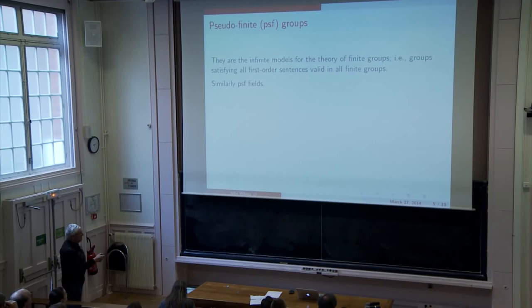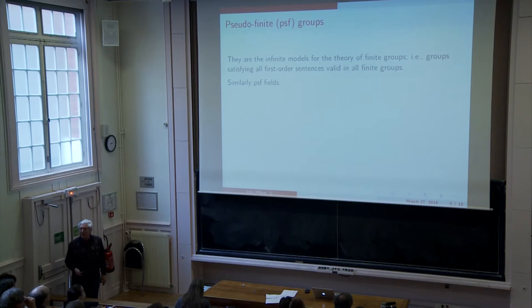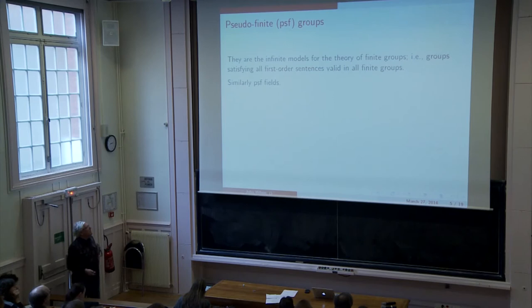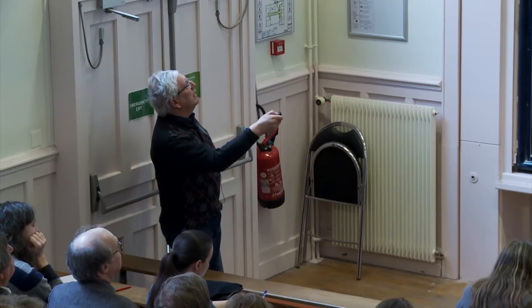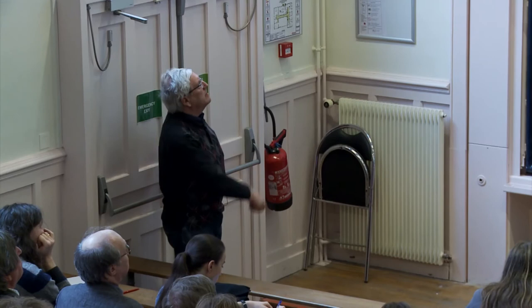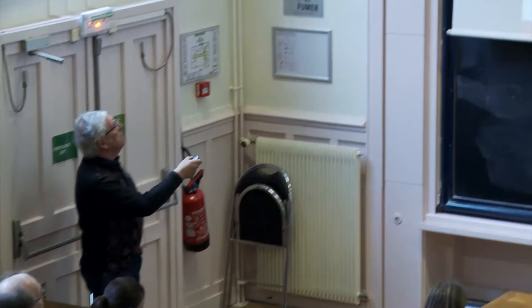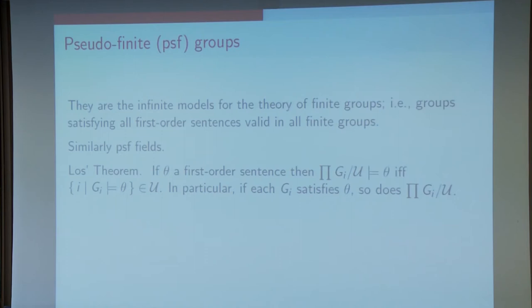I want to talk a little bit about first-order properties of groups and pseudo-finite groups. Pseudo-finite groups are the infinite groups that satisfy all first-order sentences holding in finite groups. Martin Bridson a couple of days ago wrote on the board a sentence that does hold in finite groups and doesn't hold in all infinite groups. That is the sort of thing that is picking out the pseudo-finite groups from the rest of the infinite groups. Pseudo-finite fields are defined in exactly the same way. And what's it got to do with ultraproducts? It's a consequence of Łoś's theorem. If you have a first-order sentence, then it holds in an abstract ultraproduct of groups if and only if it holds in most of the groups that make up the ultraproduct.